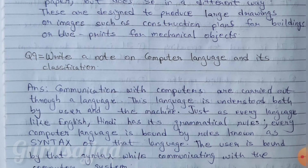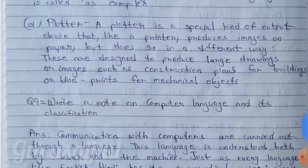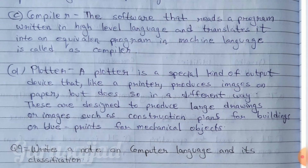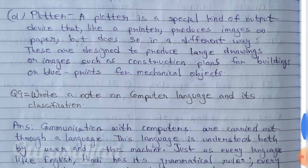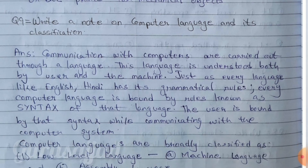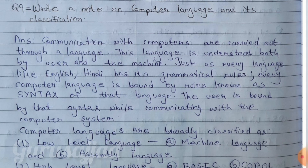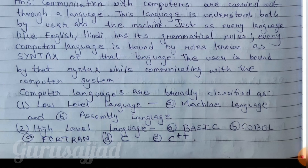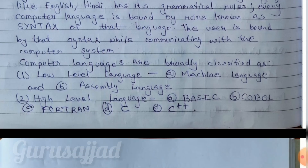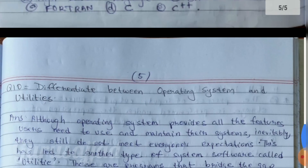Question number 9: Write a note on computer language and its classification. Answer: Communication with computers is carried out through a language understood both by the user and the machine. Just as every language like English or Hindi has grammatical rules, every computer language is bound by rules known as syntax. Computer languages are broadly classified as low level language (machine language and assembly language) and high level language, which includes BASIC, COBOL, FORTRAN (Formula Translation), C, and C++.